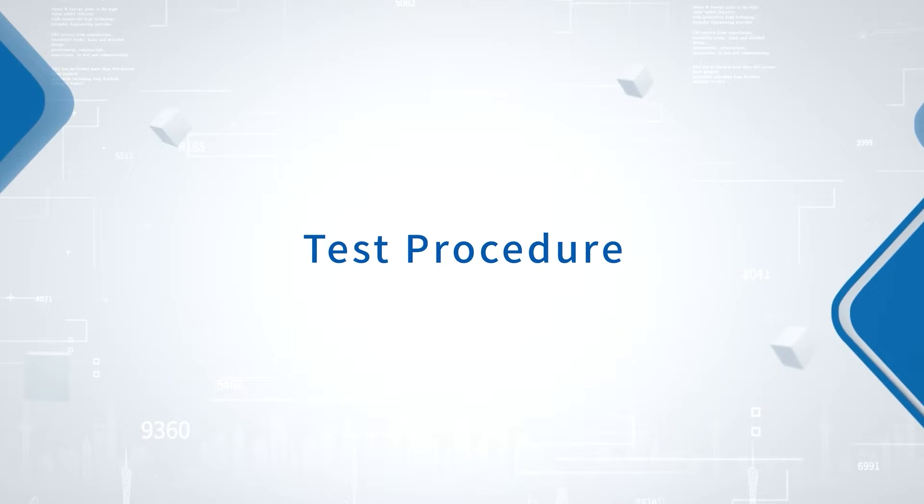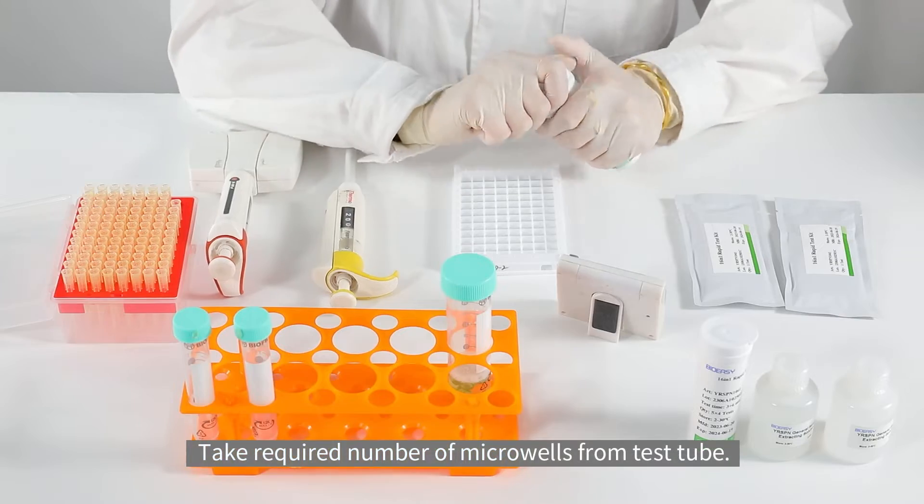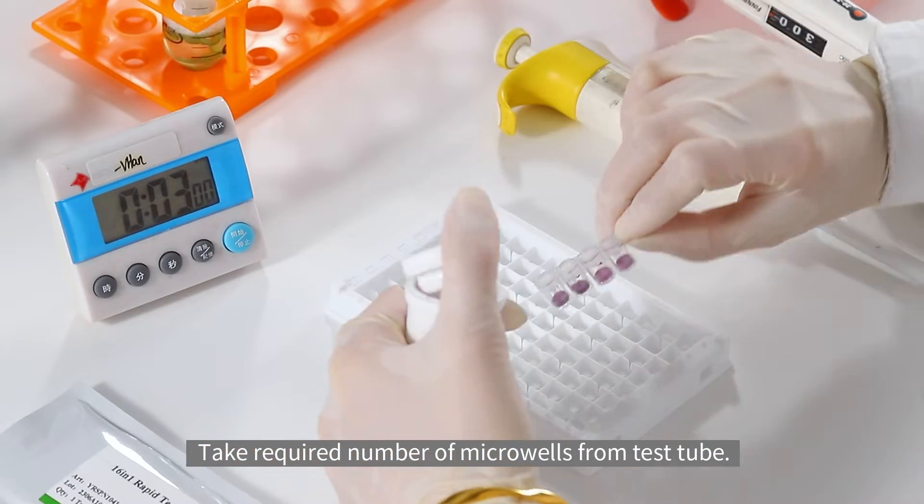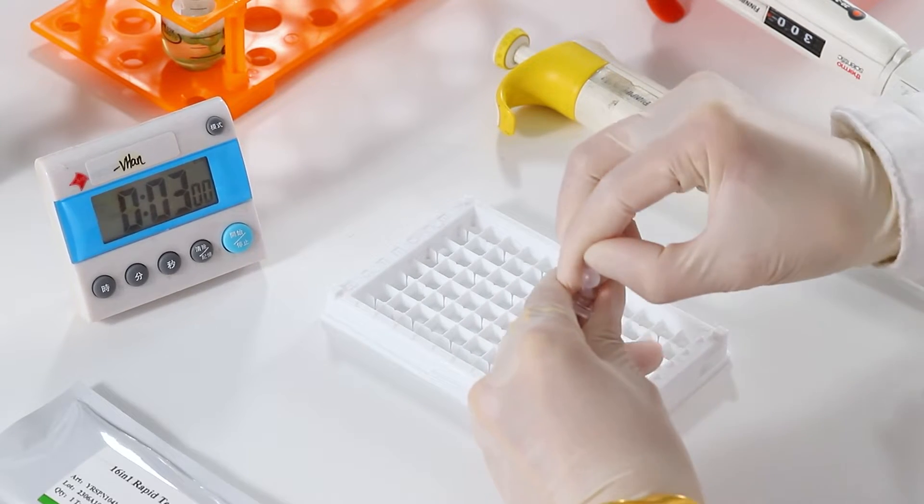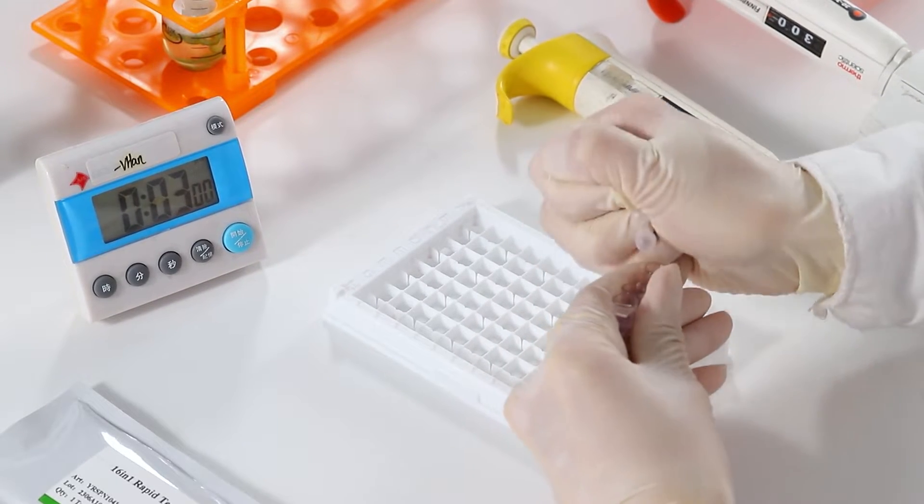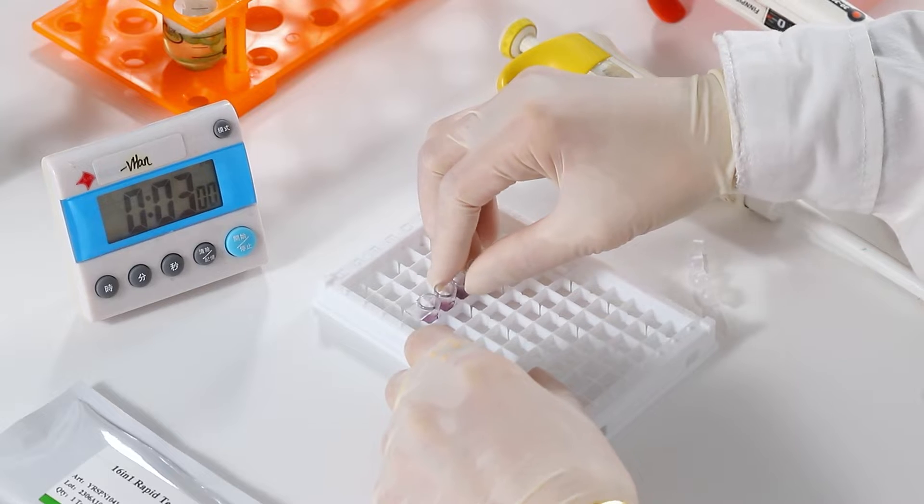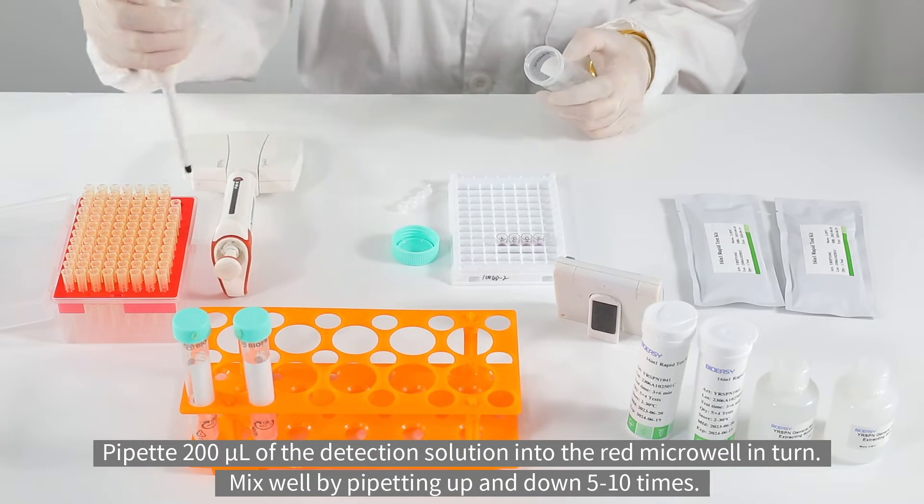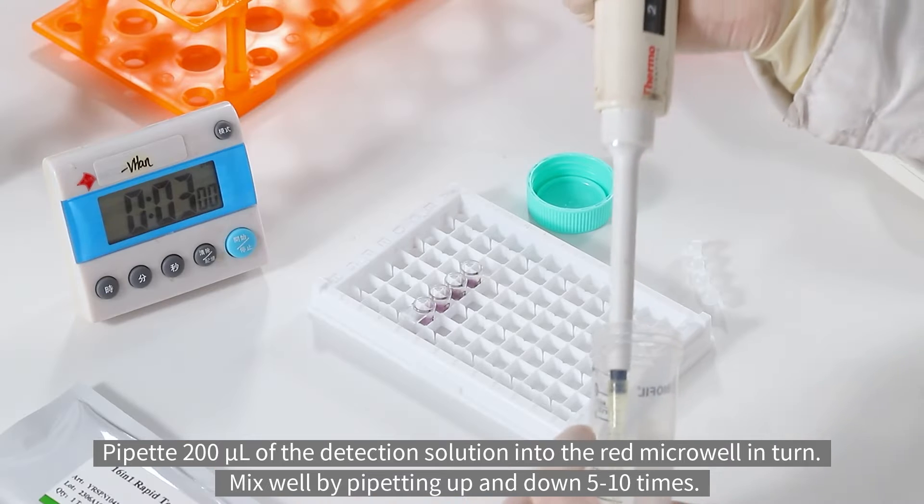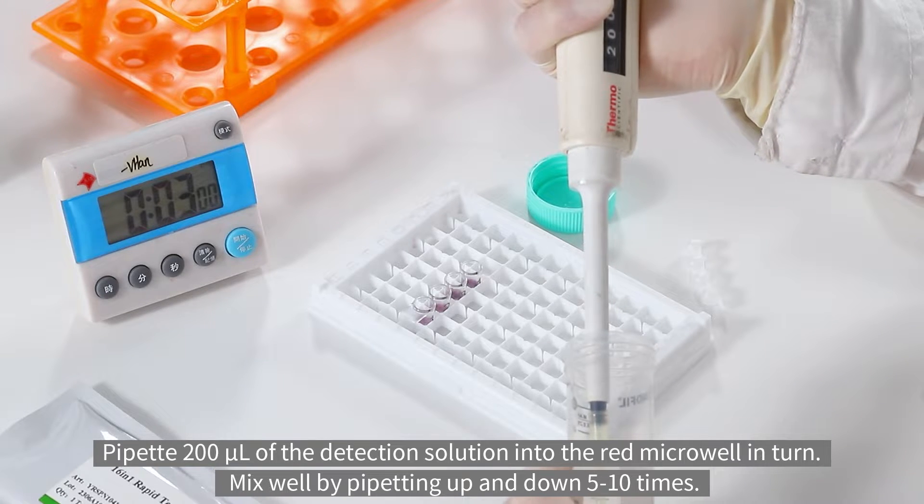Test Procedure. Take required number of microwells from test tube. Pipette 200μL of the detection solution into the red microwell in turn. Mix well by pipetting up and down 5-10 times.